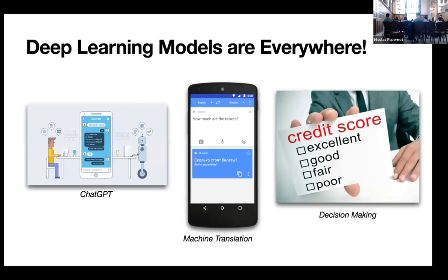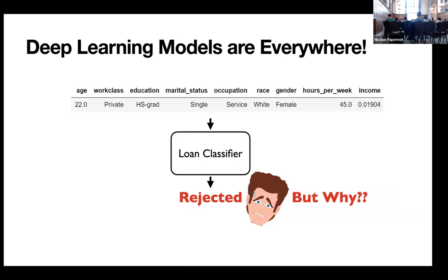Starting with deep learning models. All of us interact with deep learning models - we interact with ChatGPT, machine translation models, decision-making models. Specifically talking about decision-making models, there are a lot of models that are key applications in our day-to-day lives. For instance, we use outputs from a loan classifier, we use them for hiring decisions and other important decision-making applications.